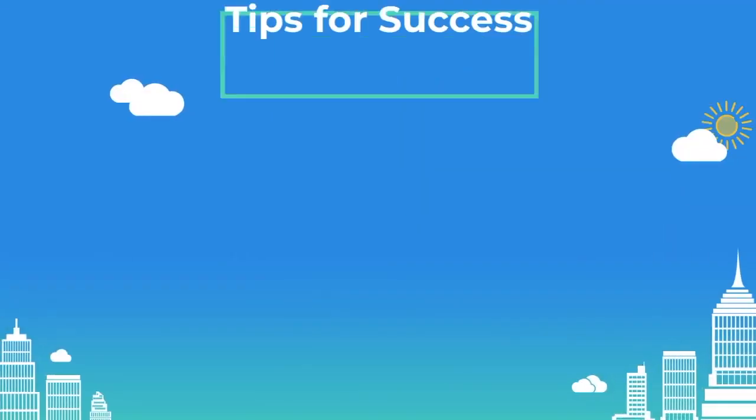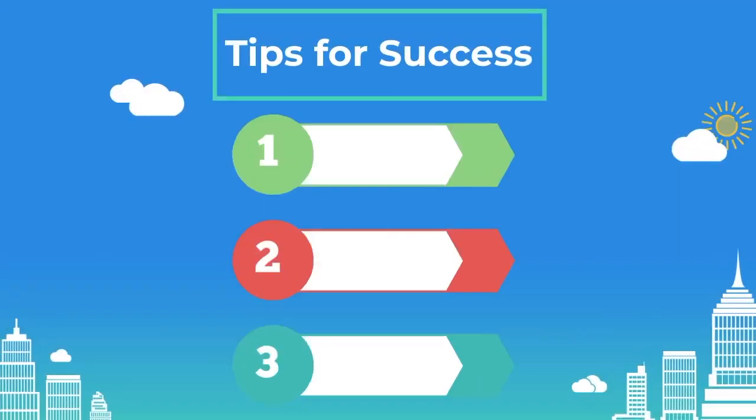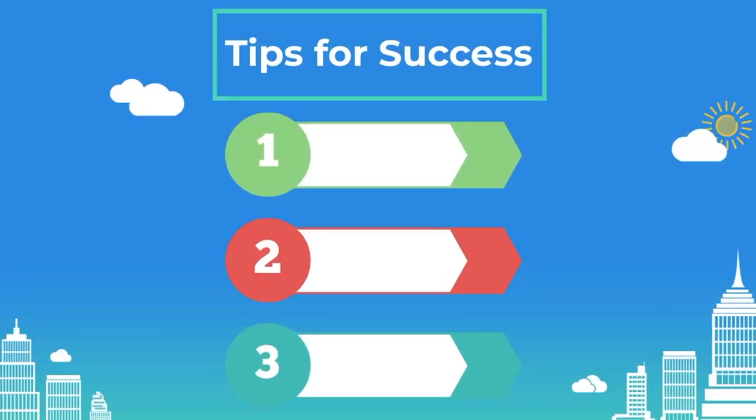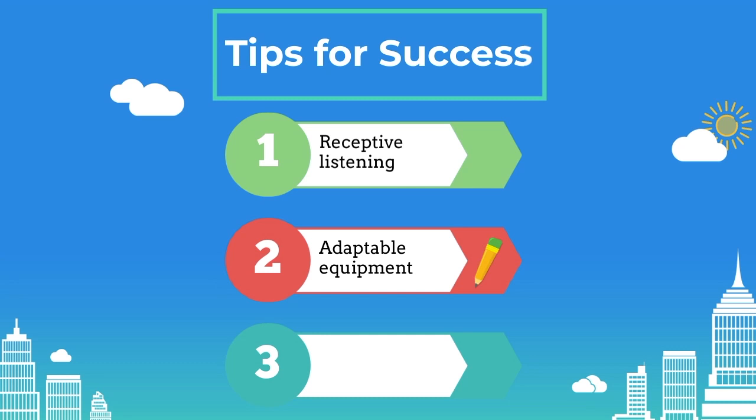Here are some strategies you can use to make your environment less restrictive for your client. You can use receptive listening, especially with clients with asthma, to help with their respiration. You can use adaptable equipment such as mallets and pencils that can require them to use more or less force, and room arrangement.